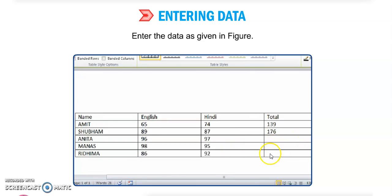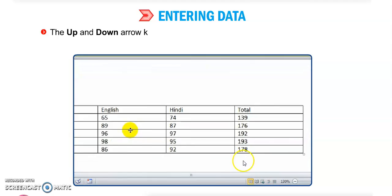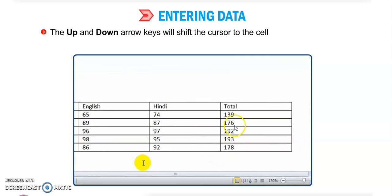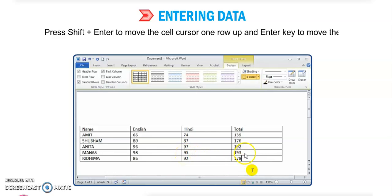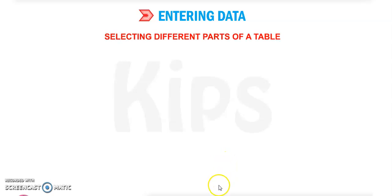Like this we can enter data in the rows and columns of the table. The up and down arrow keys will shift the cursor to the cells above or below the current cell. Press Shift+Enter to move the cursor one row up, and Enter to move one row down. This is how we move around and enter data in the table.